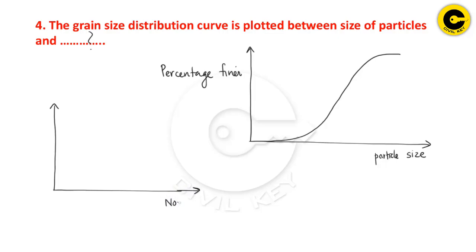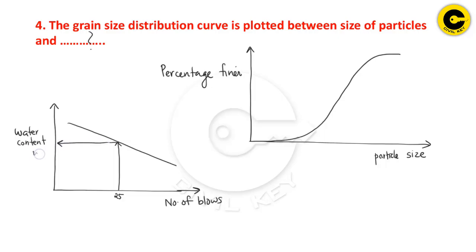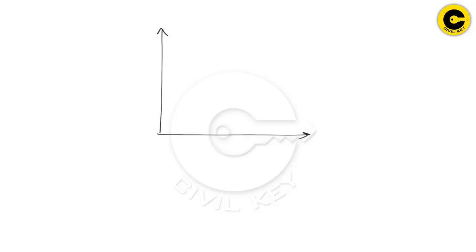The number of blows versus water content graph — this is the liquid limit graph. The y-axis is the percentage, and the graph will be compact. The y-axis shows the percentage.